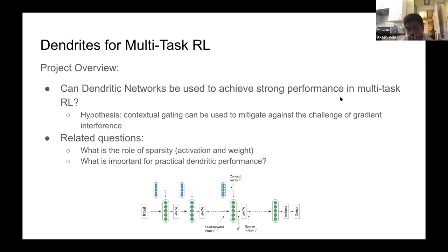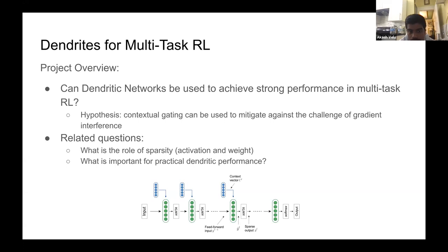The direction I'm taking with this project is: can dendritic networks be used to achieve strong performance in multitask reinforcement learning? Specifically, can the type of contextual gating used in dendrites mitigate gradient interference, and is the structure of dendrites a good one in terms of capacity for multitask learning?